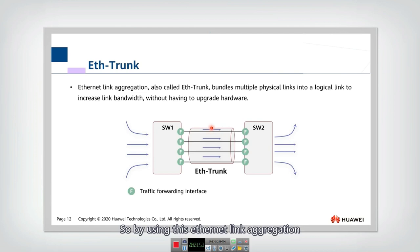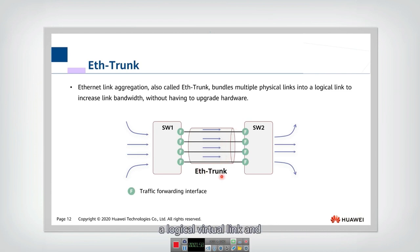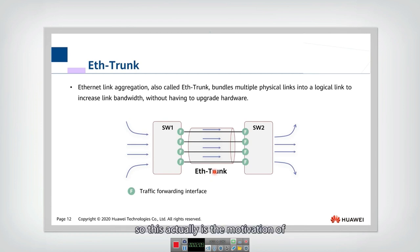By using Ethernet link aggregation, we bundle multiple physical links into a logical virtual link to increase the link bandwidth. Also, this does not require updating the hardware. This is the motivation of Ethernet link aggregation, or EtherTrunk.